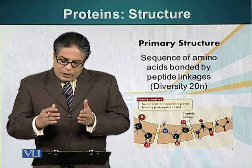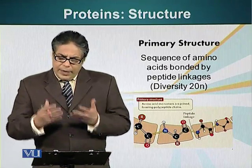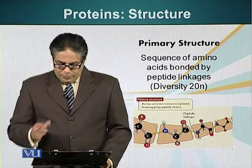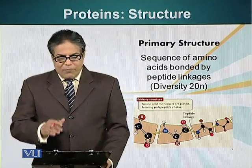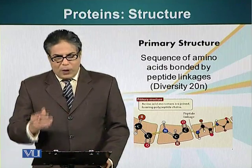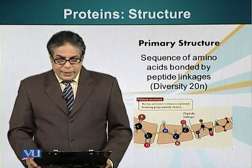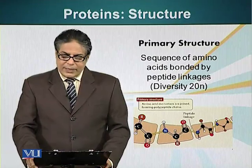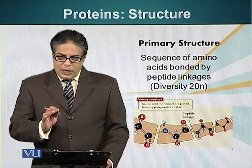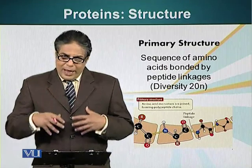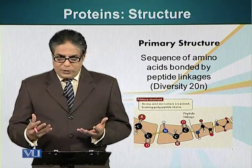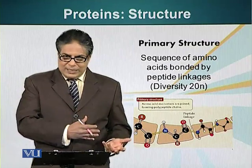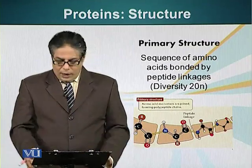If we are talking about a medium-sized protein, say 100 amino acids long, with this formula it will be 20 to the power of 100. This is a very large number. In fact, this number is so large that we don't have enough electrons in this universe — the number of electrons in this universe is less than 20 to the power of 100.